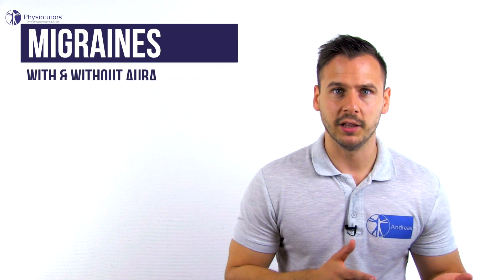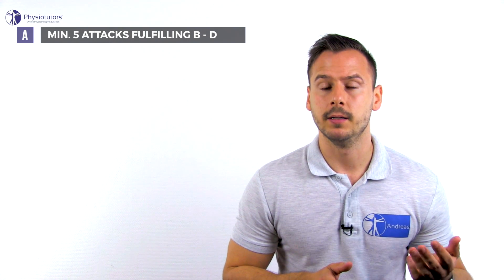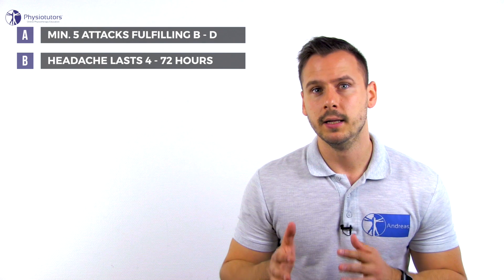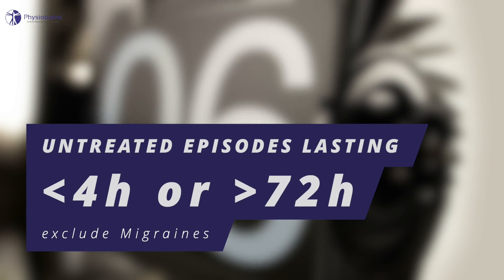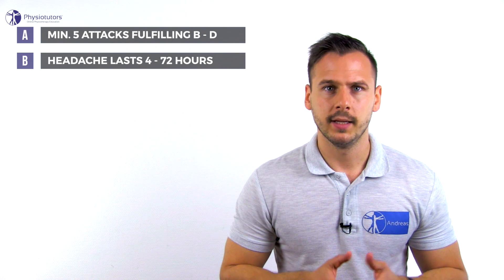Migraines exist in two distinct forms: either with or without the presence of a phenomenon called aura, but we will get to that later. In order for a headache to qualify as migraine, it has to fulfill certain criteria. Criterion A: there have to have been a minimum of five attacks fulfilling the following criteria. Criterion B: the headache lasts from 4 to 72 hours. If an untreated episode lasts less than 4 or more than 72 hours, migraines are excluded.